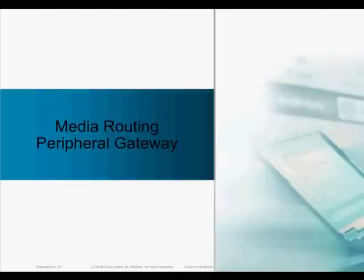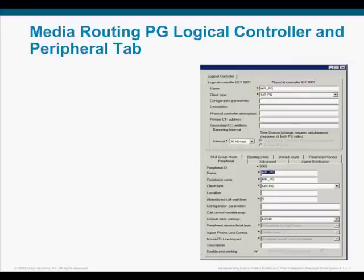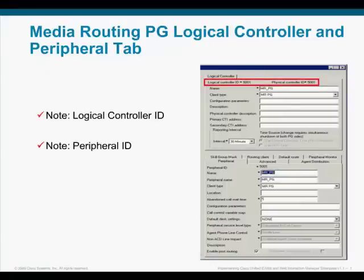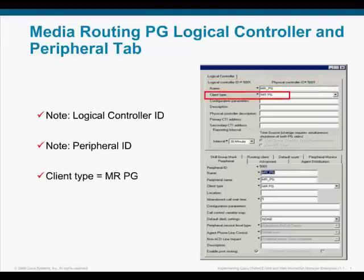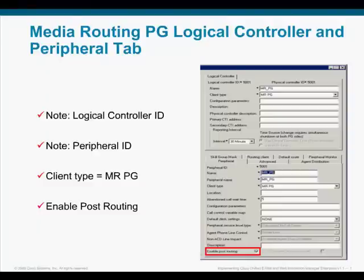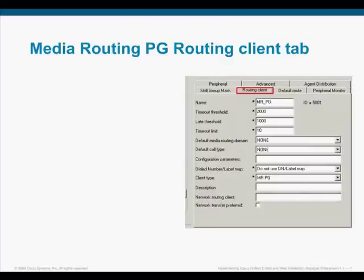Now we will take a look at specific configuration for the Media Routing PG. The Media Routing PG needs to be configured using the Configuration Manager. After saving the configuration, the system will auto-generate a logical controller ID and a peripheral ID. Note: you will need these values when you actually install the MRPG. Client type is an MRPG. Also, don't forget to enable Post Routing on the peripheral tab.